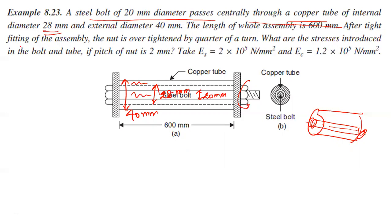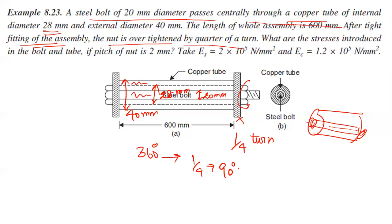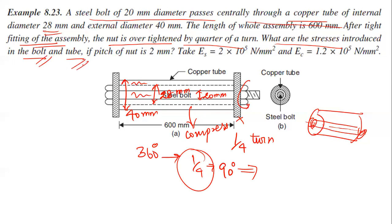After the tight fitting of the assembly, the nut is over-tightened by a quarter turn — that is, an extra 90 degrees of tightening. This causes the copper tube to compress. The question is: what are the stresses induced in the bolt and tube? The pitch of the nut is 2 mm.